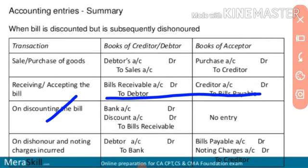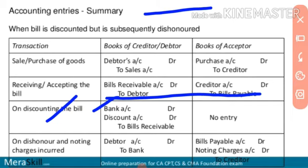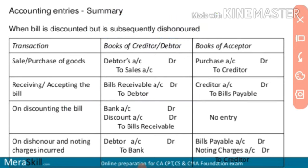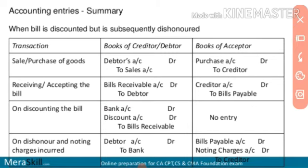Now let us look at the condition when the bill is discounted with the bank. In this case, when A discounts the bill with the bank, the entry in A's books is: Bank account debit, Discount account debit (discounting charges), to Bills Receivable account credit. So the discounting charges are debited and the bill receivable is credited.